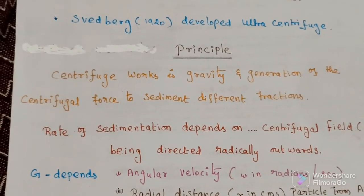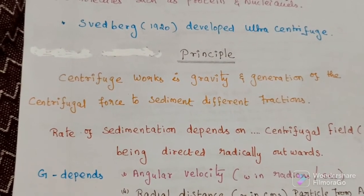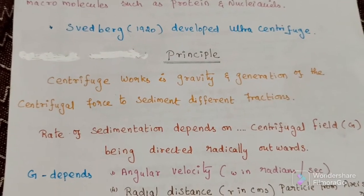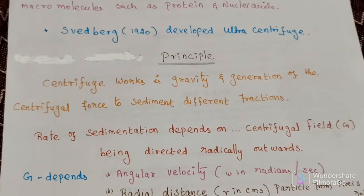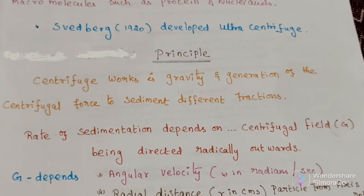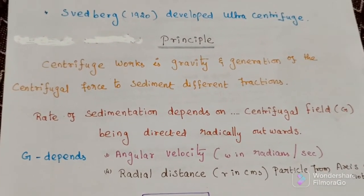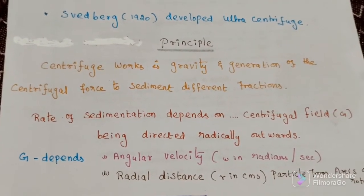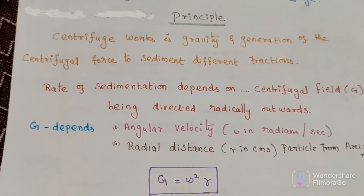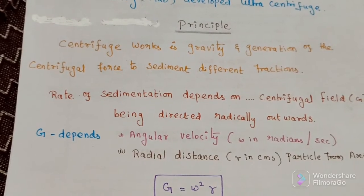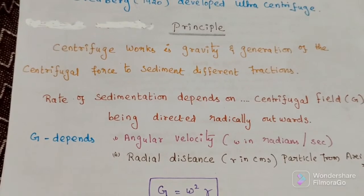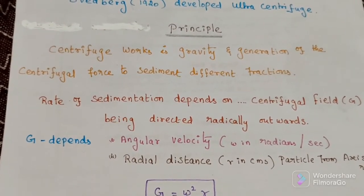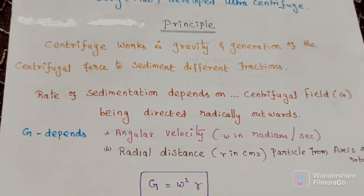What is the principle? The basic physics on which the centrifuge works is gravity and the generation of centrifugal force to sediment different types of fractions. The rate of sedimentation depends on the applied centrifugal field, that is G. G depends on angular velocity omega in radians per second and radial distance R in cm. So G represents the centrifugal force, omega is angular velocity, and R is the radial distance.